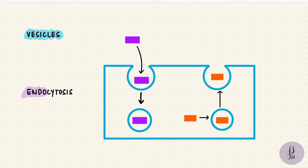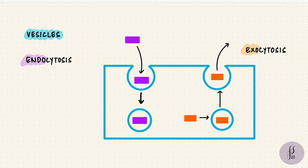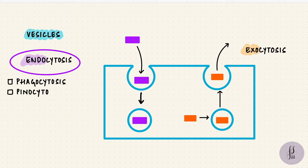And if instead the cell is throwing something out, that's by exocytosis. Exo is external. And these are the methods of bulk transport. There are different kinds of endocytosis. It could be phagocytosis, pinocytosis, or receptor-mediated endocytosis.